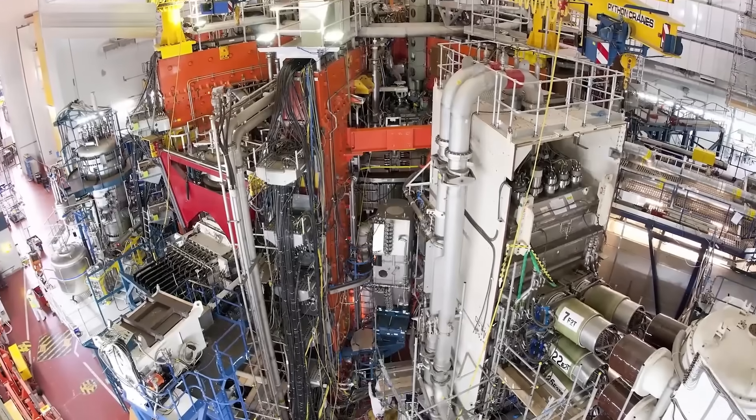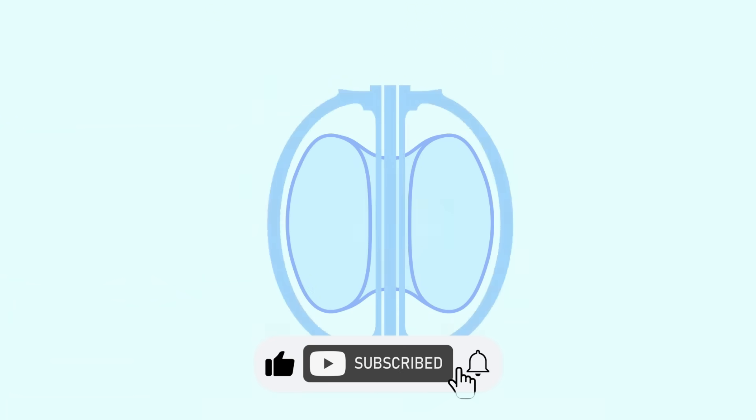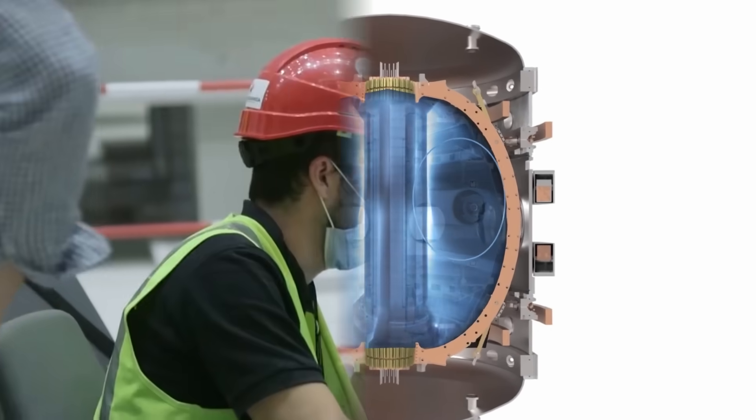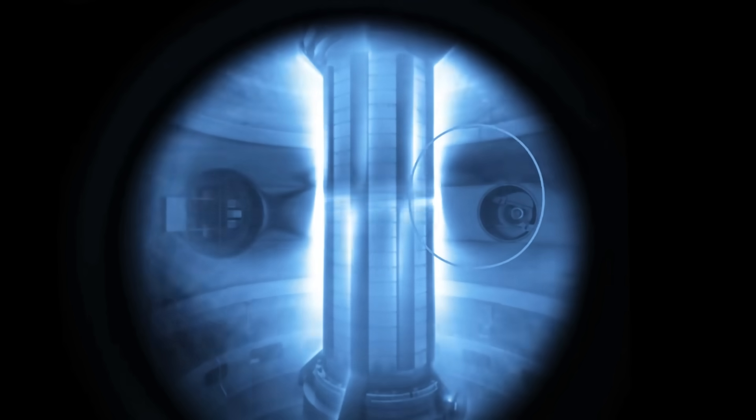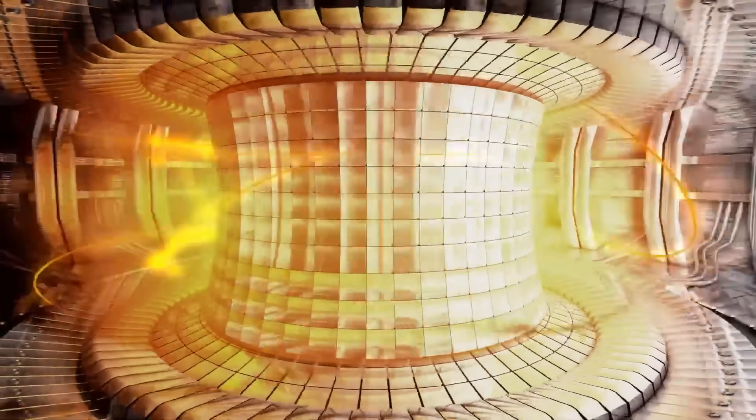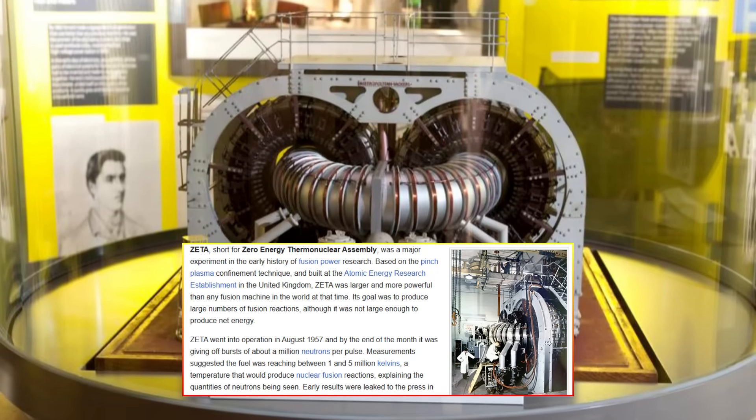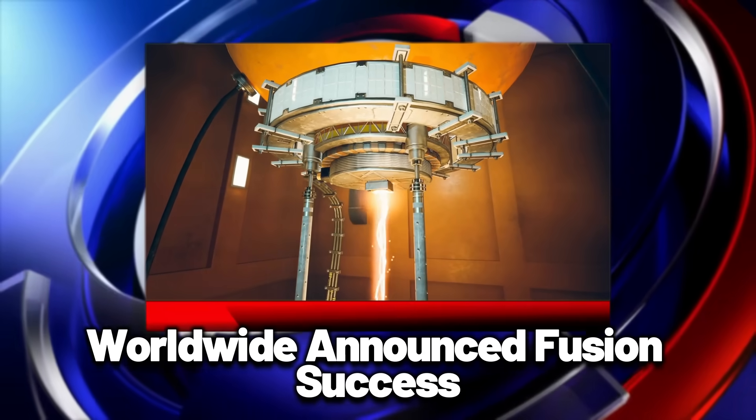The fusion landscape isn't just government labs anymore. Private competitors like Helion, TAE Technologies, and Zap Energy are racing toward commercial fusion with billions in venture capital. Helion's seventh generation reactor is aiming for electricity production by 2024. TAE Technologies has already achieved plasma temperatures over 75 million degrees with their Norman machine. What if national laboratories don't want to be upstaged by startups? What if maintaining government funding requires controlling the narrative around breakthrough moments?